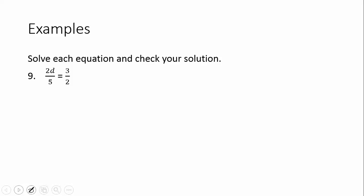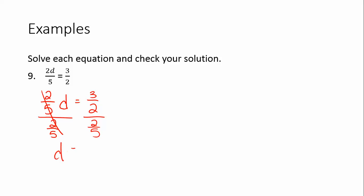This one is similar but written a little differently. Whenever the variable is up in the numerator, you can write this as 2 fifths times d equals 3 over 2. We have multiplication here, so we need to divide both sides by 2 fifths. Dividing by a fraction is the same as multiplying by the reciprocal, so we multiply by 5 over 2. We get d equals 15 over 4. That can't be reduced, so we can leave our answer just like that.